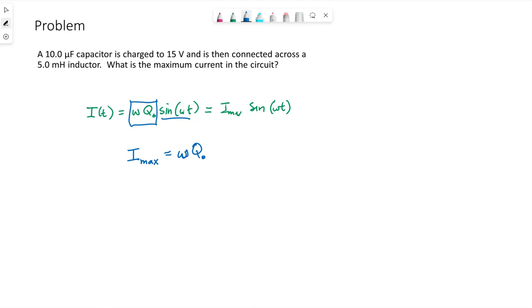We also know that omega equals the square root of 1 over LC for an LC circuit. So we can write this maximum current as q₀ over the square root of LC.